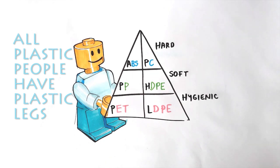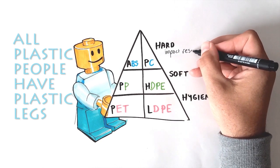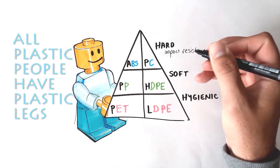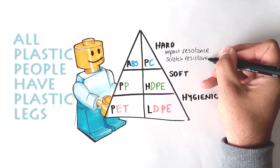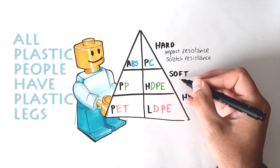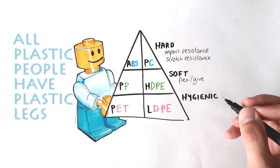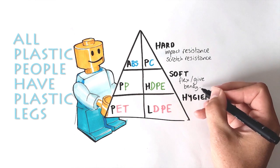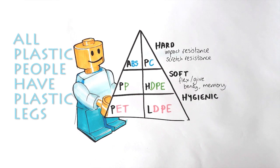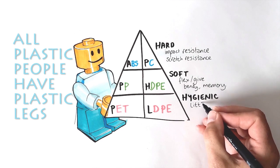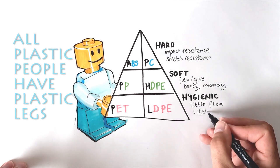The types of terms that you need to be familiar with, terms such as impact resistance, its ability to take hits, if you remember the hammer hitting the plastic. Scratch resistance, where you're requiring a plastic or a product to be able to deal with continual scuffing. Our soft plastics, we're using terms such as flex and give. The plastic's ability to actually bend and then spring back into its original shape. Remember, that's called memory. And finally, our hygienic plastics, which have little flex and little memory. If you crush a hygienic plastic such as PET, all you're going to end up with is a crushed bottle.